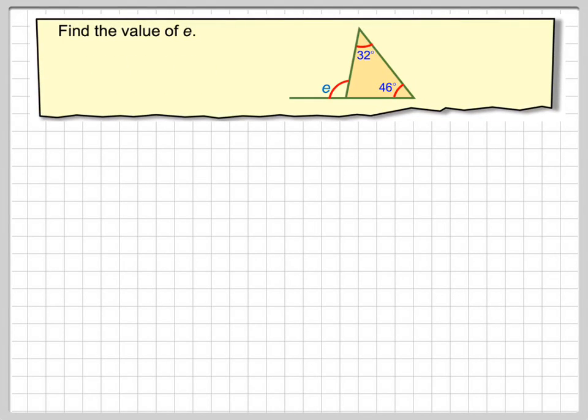So it says here, find the value of E. E is this angle here. This is known as an exterior angle, because we extend this line along here, we get what's known as an exterior angle.